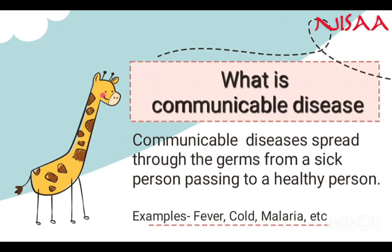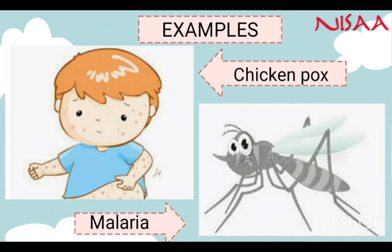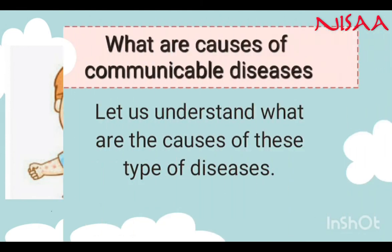What do we understand by communicable diseases? Communicable diseases spread through germs from a sick person to a healthy person, and hence the healthy person also becomes sick. The examples of communicable diseases are cold, fever, malaria, and chickenpox.